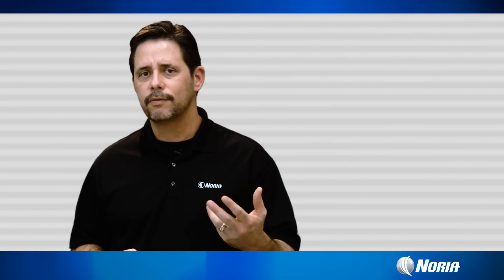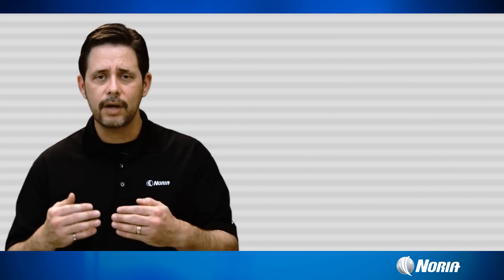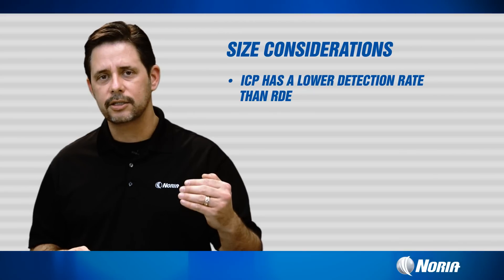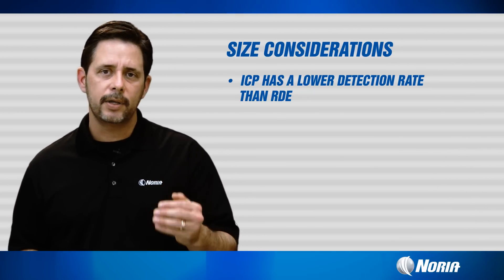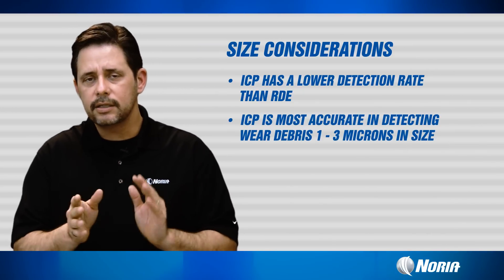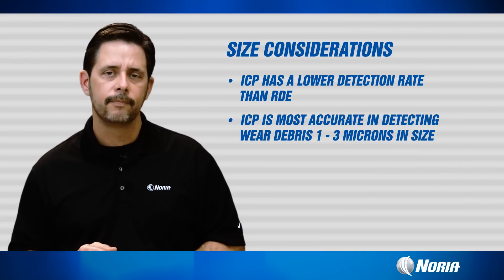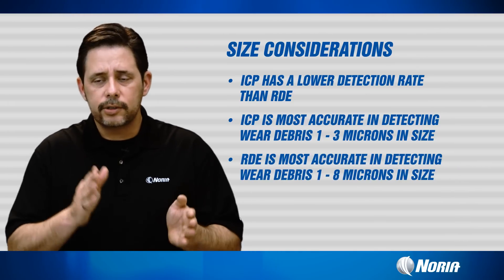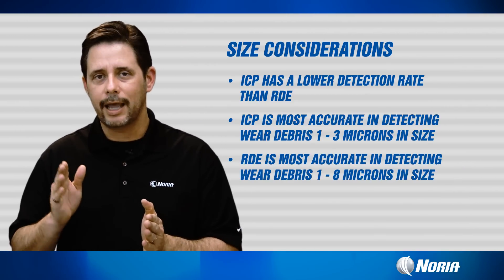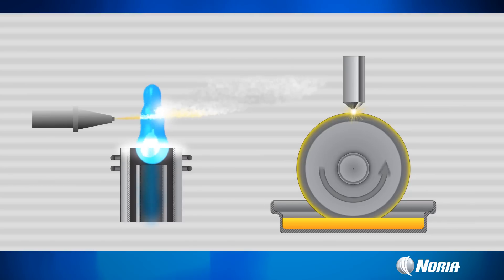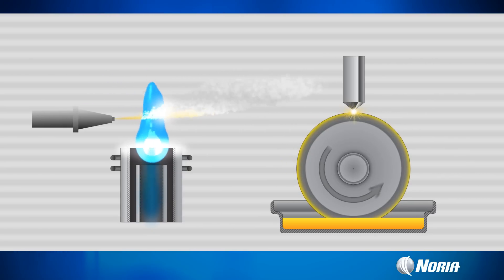The accuracy of these machines is very good, provided that the calibration standard is up to date. Both machines do have size limitations as mentioned earlier. The ICP has a lower detection level than the ROTRODE — it is very accurate from 1 to 3 microns in size, begins losing accuracy up to about 5 microns, and beyond that is essentially blind. ROTRODE spectroscopy is accurate up to about 8 microns, loses accuracy between 8 and 10 microns, and is completely blind above 10 microns. This means we really cannot compare data between a laboratory using ICP and one using rotating disc spectroscopy.